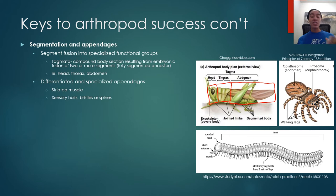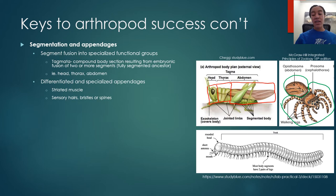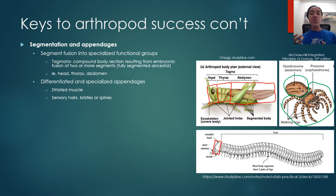We also see cephalothorax-abdomen segmentation in spiders, where the head and thorax fuse into one structure. In this spider, the cephalothorax includes the legs and the anterior region, while everything posterior is the abdomen. In myriapods, we see head-trunk segmentation, where everything posterior to the head is the trunk. In addition to segmentation, arthropods have differentiated and specialized appendages that move via striated muscles - including antennae, legs, pedipalps, and chelicerae - plus sensory hairs, bristles, and spines for sensing environmental changes.